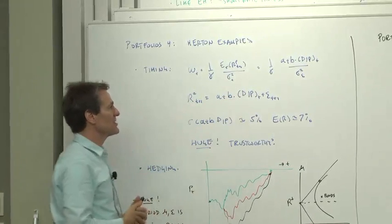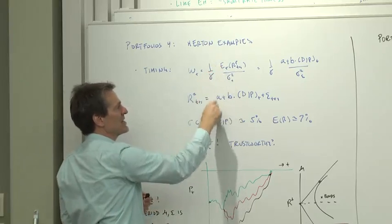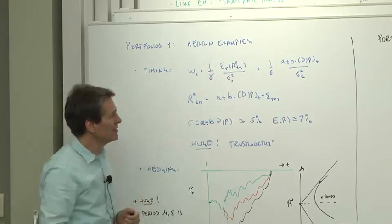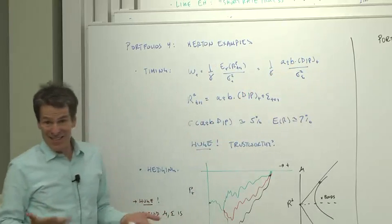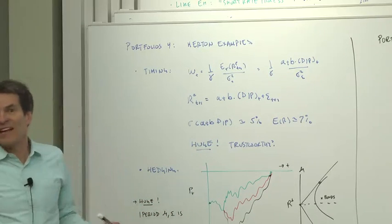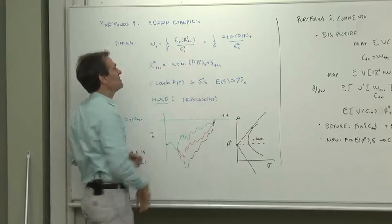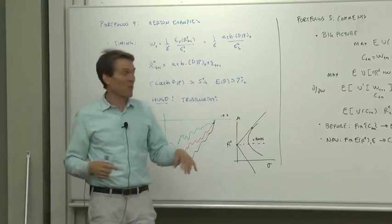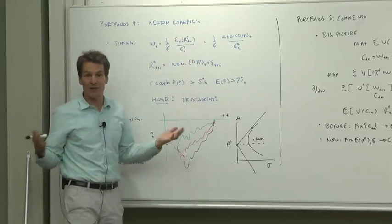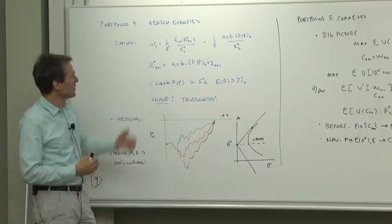Returns are forecast by dividend price ratios. That means that the expected excess return is the fitted value of this regression. So A plus B DP is what you'd put on the top there. And this is a very simple version of what hedge funds do all the time. They run regressions to make models of mean returns. They put them in portfolio maximizers and then they think about if they want to take the portfolio advice that come out of those portfolio maximizers. They just do much bigger regressions than we're going to run on the board here.